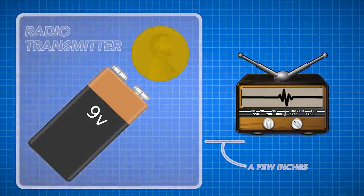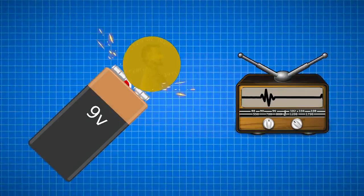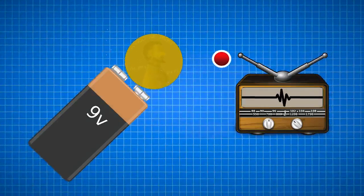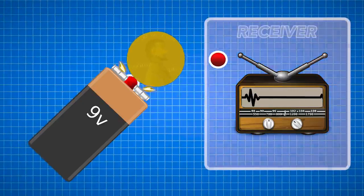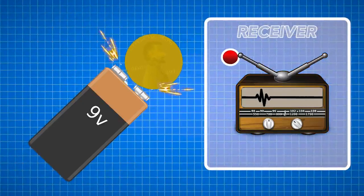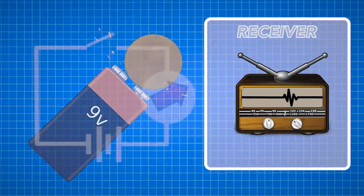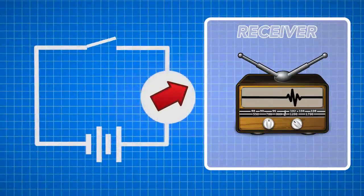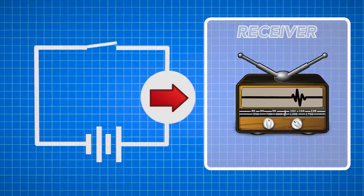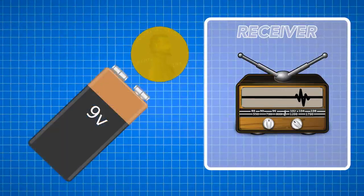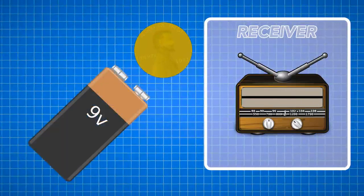What you're doing in this process is exciting electrons on the transmitter side, the battery and the coin, which then is received as a signal on the receiving side, the AM radio, and turned back into an audio output. What you're doing is completing a circuit between the battery terminals which creates an electromagnetic force, which can be detected by the receiver in the AM radio.